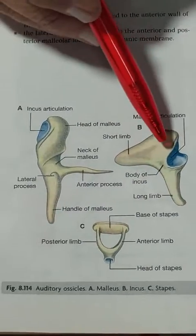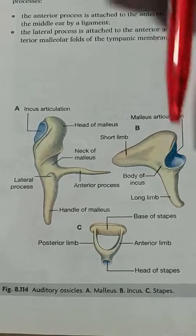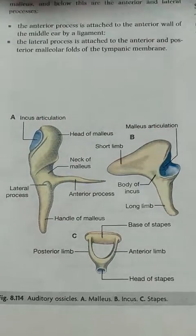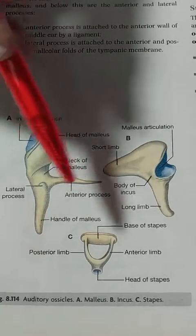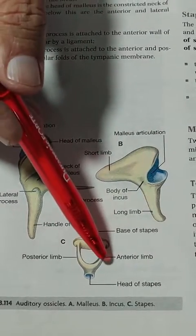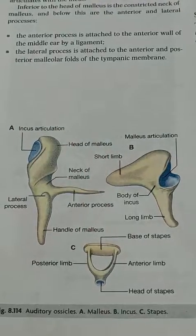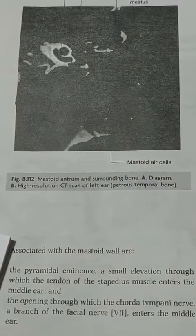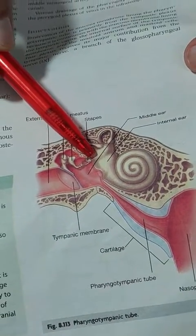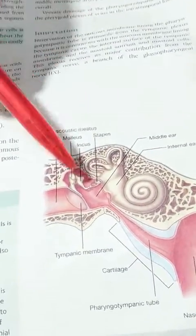The incus has a body, a short limb, and a long limb. On the body is an articular facet which articulates with the head of the malleus to form a synovial joint. The third bone is the stapes, which has a small head, anterior and posterior limbs, and a base also called the foot piece of the stapes. This foot piece of the stapes passes through the oval window to come into contact with the internal ear.